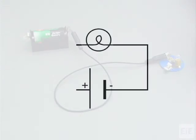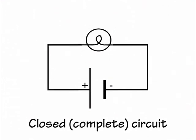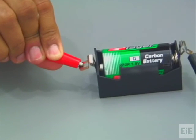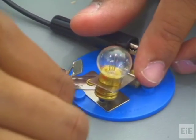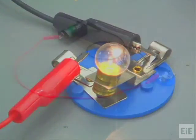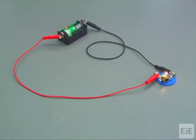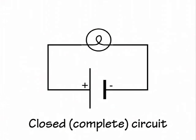A closed or complete circuit occurs when current is able to flow through the entire circuit. By connecting the positive pole of the battery to the bulb, the circuit is completed and the bulb lights. This circuit is a series circuit because there is only one path through which electricity can flow, and the current goes through every component in the circuit.